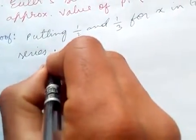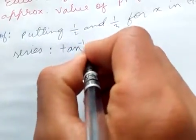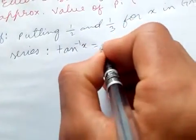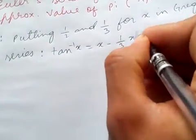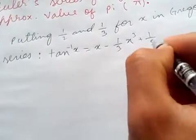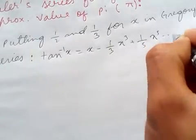Let's use the series: tan inverse of x is equal to x minus 1 over 3 x cubed plus 1 over 5 x to the fifth minus and so on.